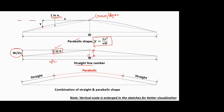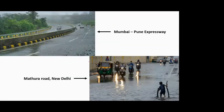The third camber shape is a combination of straight and parabolic. At the edges it is straight, while the central portion near the apex is given a parabolic shape instead of a sharp edge. The same equations apply — the parabolic equation for the center portion and the 1-in-n slope concept for the straight portions.